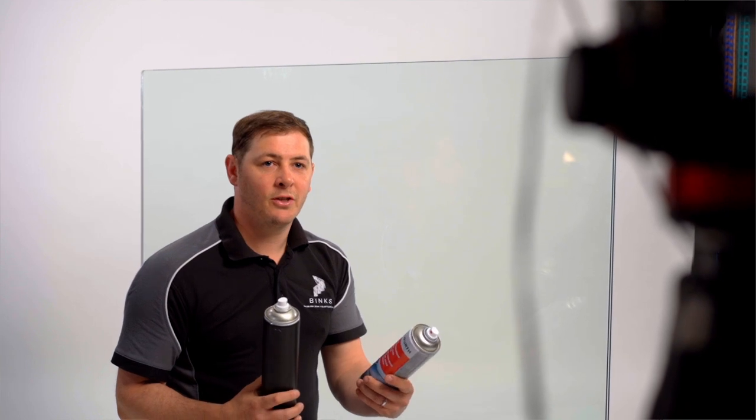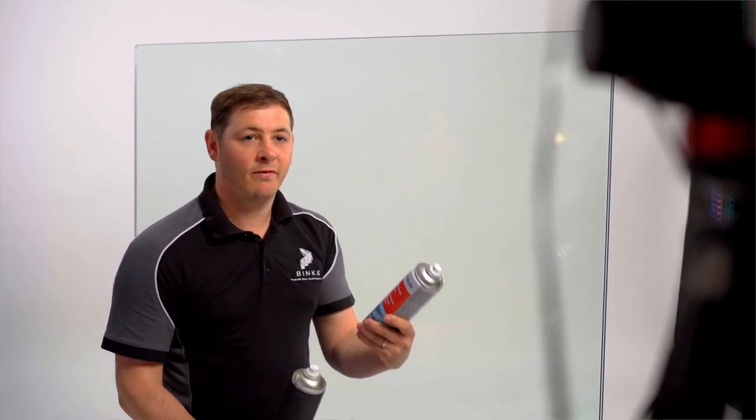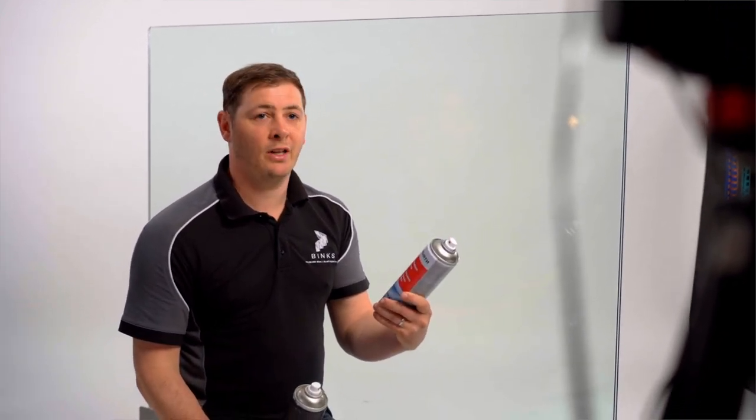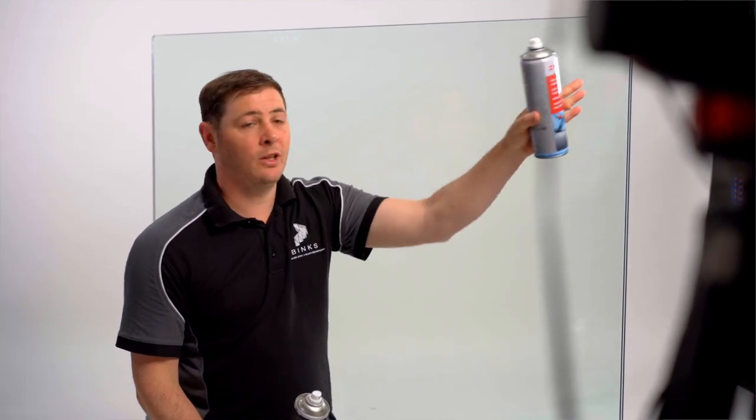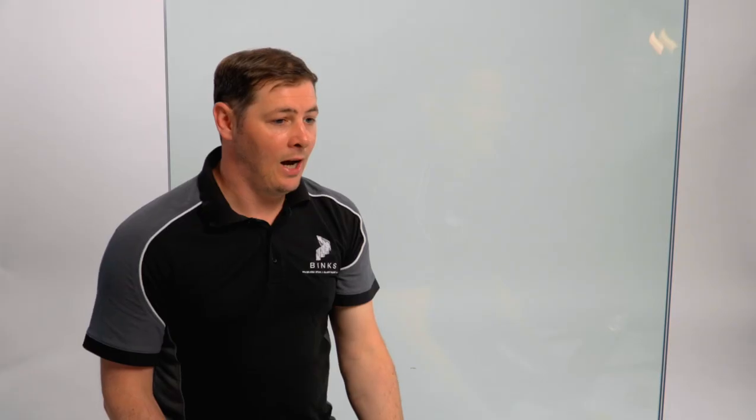So as you can see the difference between the cheaper version and the more expensive version, the more expensive version foams up much more on the surface of the glass. It easily removes the glue from the corner of the glass as well, and it also lifts off the dirt much easier when you're polishing the face of the glass.